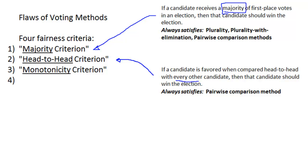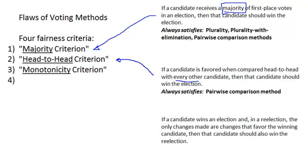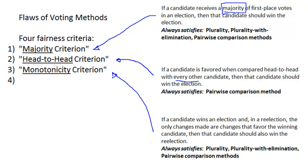The third fairness criterion is called the monotonicity criterion. It works like this: if a candidate wins an election and there is soon thereafter a re-election, and the only changes made between the first election and the second are changes that favor the winning candidate, then that candidate should also win the re-election. So if changes are in favor of the winner from the first election, that same candidate should win the second time. This criterion always satisfies plurality, plurality with elimination, and pairwise comparison methods.